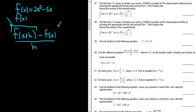Well basically you just replace all of the x's with x+h. So it's 2(x+h)² replacing the x with x+h, minus 5, and then instead of x it's x+h.